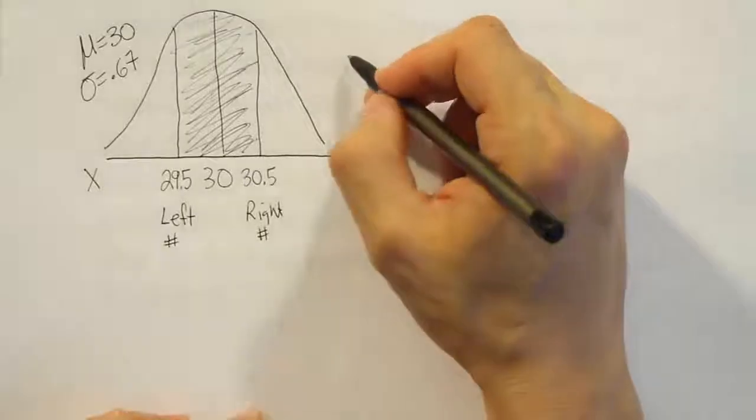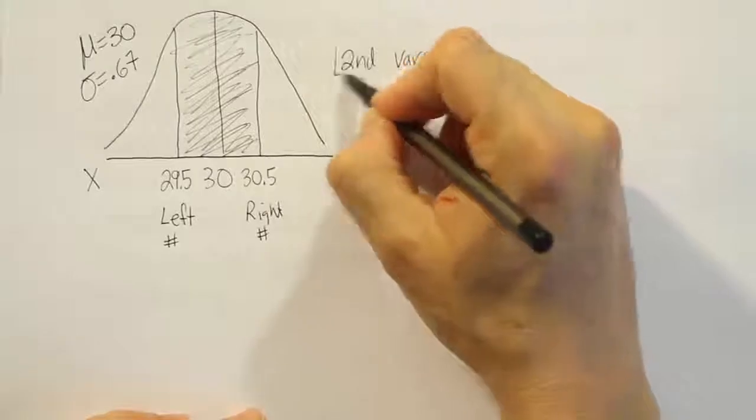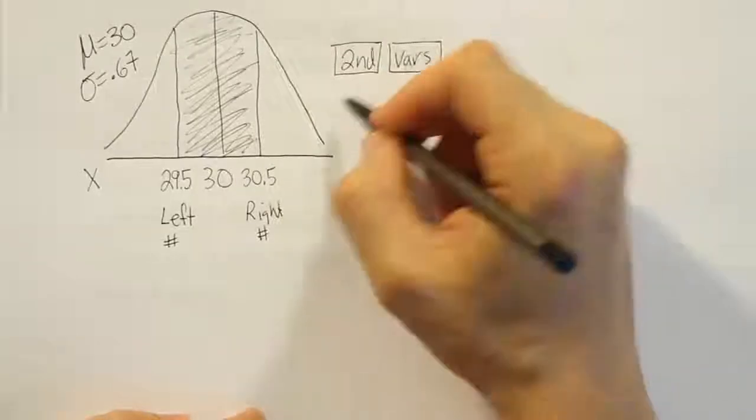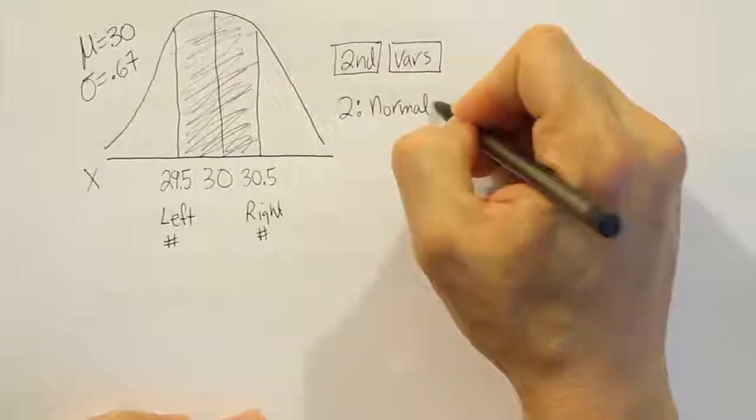Then we just have to do the rest in our calculator. We'll do 2nd VARS, so press the 2nd key, press the VARS key, take option number 2, which says normalcdf.